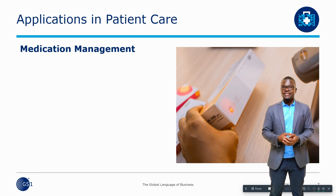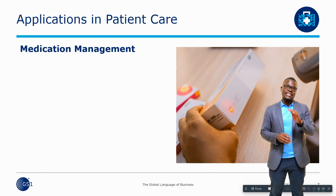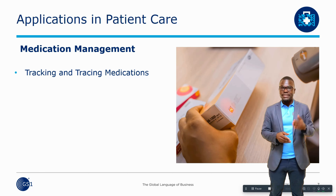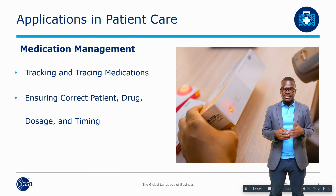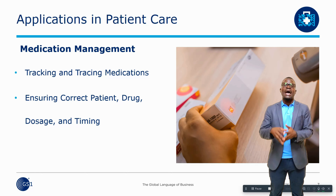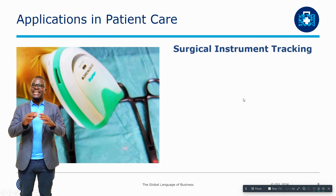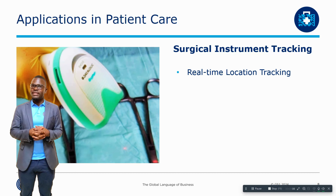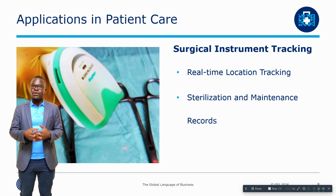The GS1 data matrix has several important applications in patient care. In terms of medication management, it can be used to track and trace medications from production to administration, ensuring that medications are authentic and safe. It can also be used to reduce medical errors by ensuring patients receive the correct medications as prescribed. Surgical instrument tracking is another vital application — we can monitor the location of surgical instruments within the healthcare facility, and also ensure instruments are properly sterilized and maintained, thereby reducing the risk of infections.